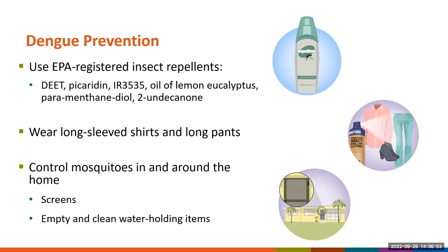Methods of dengue prevention are historically based on preventing mosquito bites and include the use of EPA-registered insect repellents and wearing long-sleeve shirts and long pants. Additionally, controlling mosquitoes around the home can reduce exposure, including having screens in windows and doors, staying in locations with air conditioning, and regularly emptying and cleaning water-holding items that can serve as breeding sites for mosquitoes.